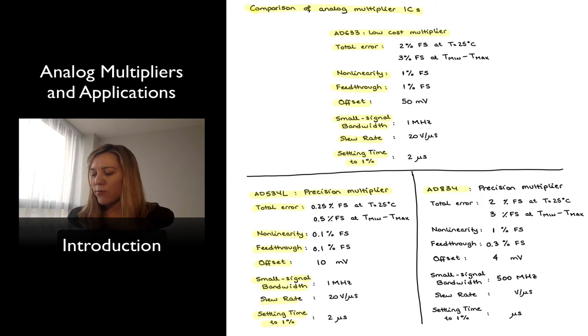The AD834 is not a precision multiplier, but rather a high-speed or high bandwidth multiplier. In terms of its accuracy characteristics, the total error is comparable to that of the 633, it has the same specifications, same non-linearity, slightly better feed-through, and better offset.